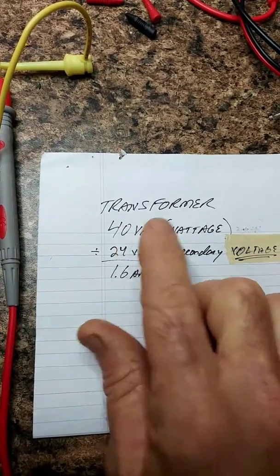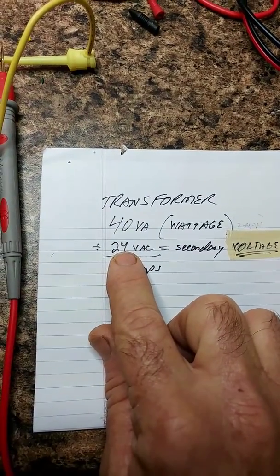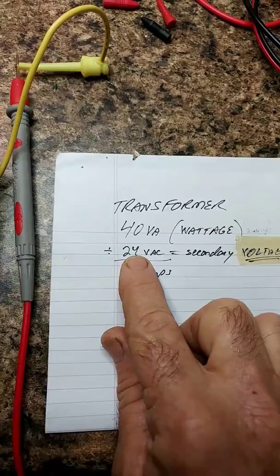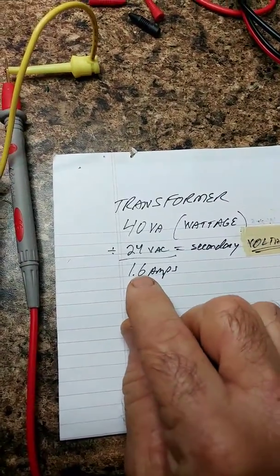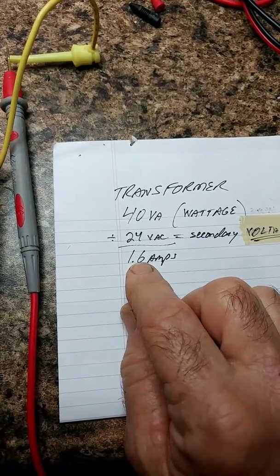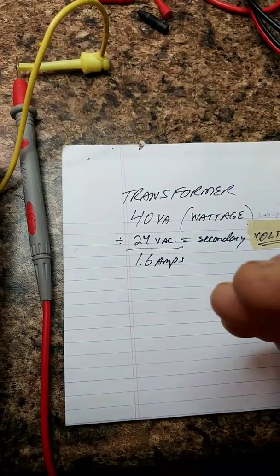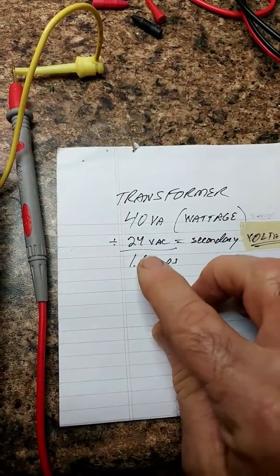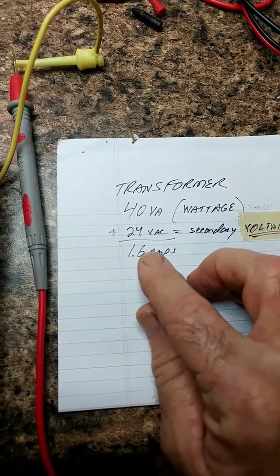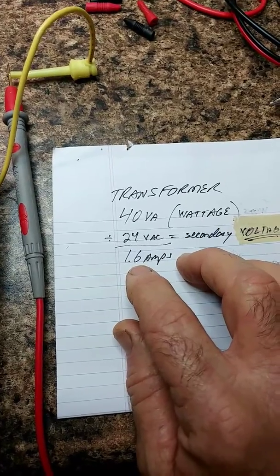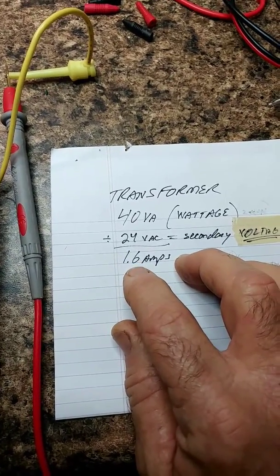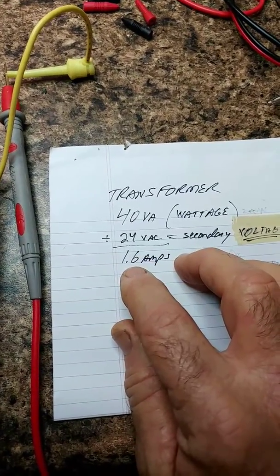So a 40VA transformer, if you divide the secondary voltage into it, which is 24 volts, in our case it's 28, it's rated for 1.6 amps. So if I'm using 28 volts, it would actually be less than 1.6 amps. So it doesn't take a lot of amperage to burn up a 40VA transformer.